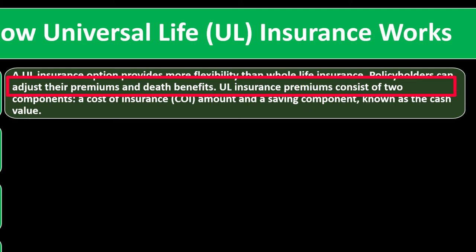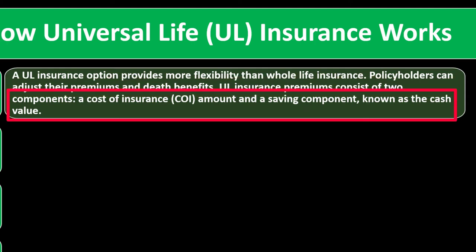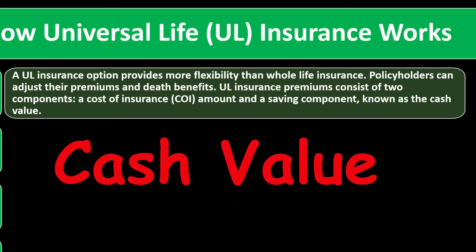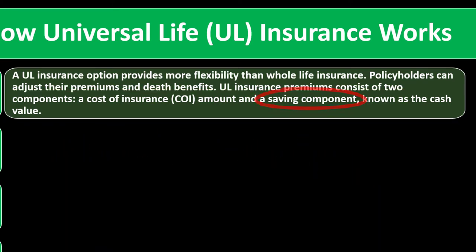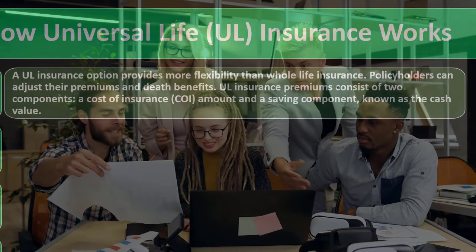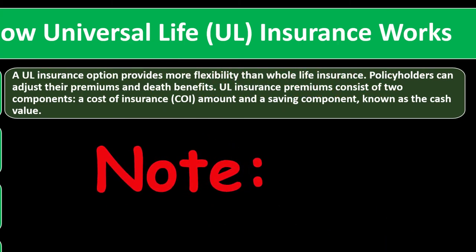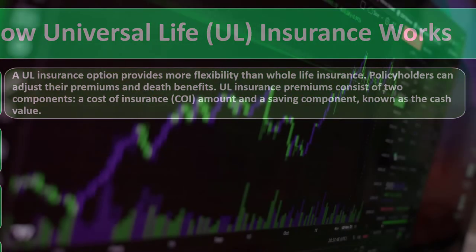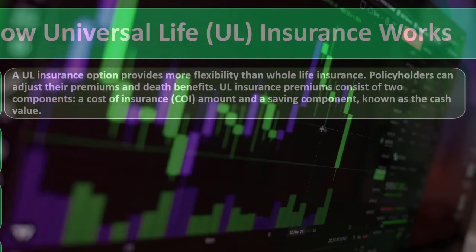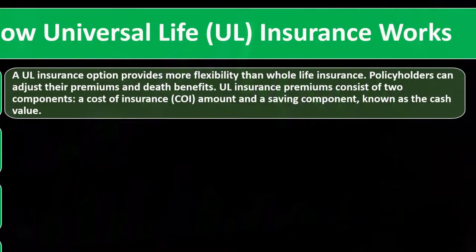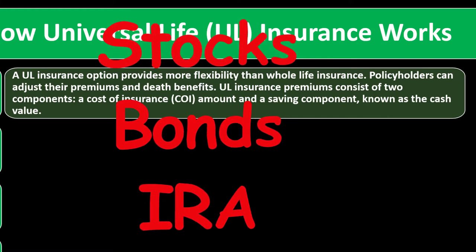UL insurance premiums consist of two components: a cost of insurance, that's the COI amount, and a savings component known as the cash value. So we've got this cash value coming into play, which is that savings component, which makes it a bit more complex and gives it a saving option. You always want to be comparing and contrasting to term insurance, noting the adage of buying term insurance — which is possibly cheaper — and then investing the difference into stocks, bonds, an IRA, or something like that.